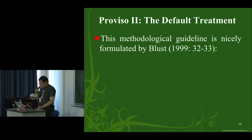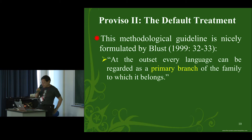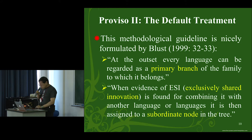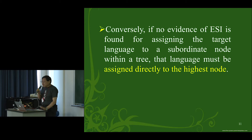The second qualification advises us what the default approach should be. This methodological guideline has been nicely formulated by Robert Blust. He says: at the outset, every language can be regarded as a primary branch of the family to which it belongs — that's the default treatment, put it at the highest level. When evidence of ESI, or exclusively shared innovation, is found for combining it with another language or languages, it is then assigned to a subordinate node in the tree. Like hangers on a clothesline at the very top.